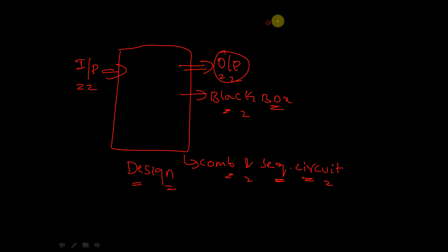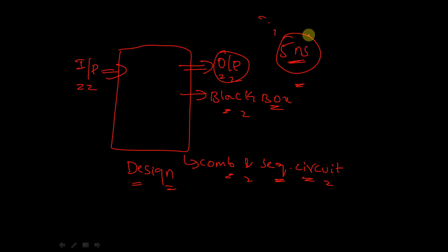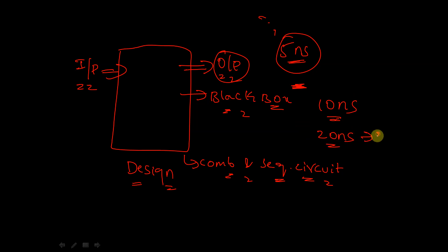Let's say we need to get the output at 5 nanoseconds. In digital circuits we deal with nanosecond and picosecond time periods, and within that time we should get a particular output. What if the output is not arriving at 5 nanoseconds but is delayed to 10, 20, or even 30 nanoseconds?